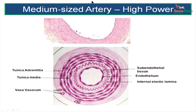In a higher power view of a medium sized artery, you can see a very prominent internal elastic lamina. The fine tissue inner to this is the endothelium along with the subendothelial tissue. The thick layer is the tunica media and the outer is the tunica adventitia. The internal elastic lamina appears wavy because during rigor mortis there is contraction of smooth muscle, which makes the elastic fibres become wavy as the diameter of the vessel reduces.